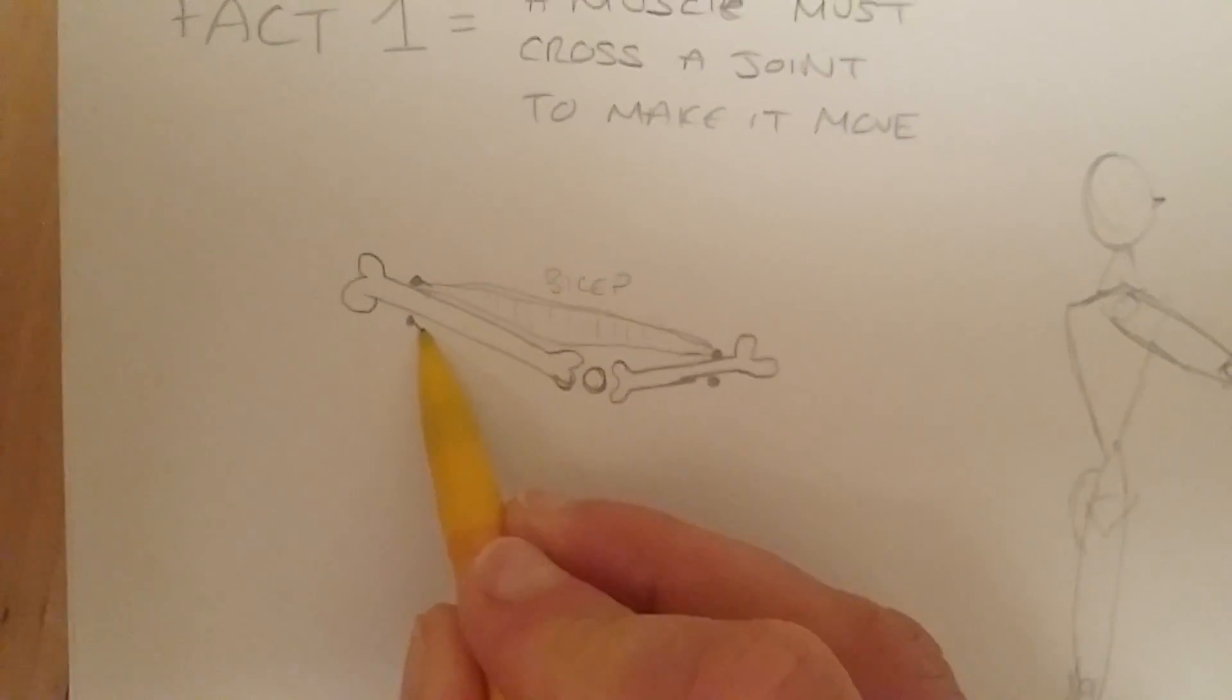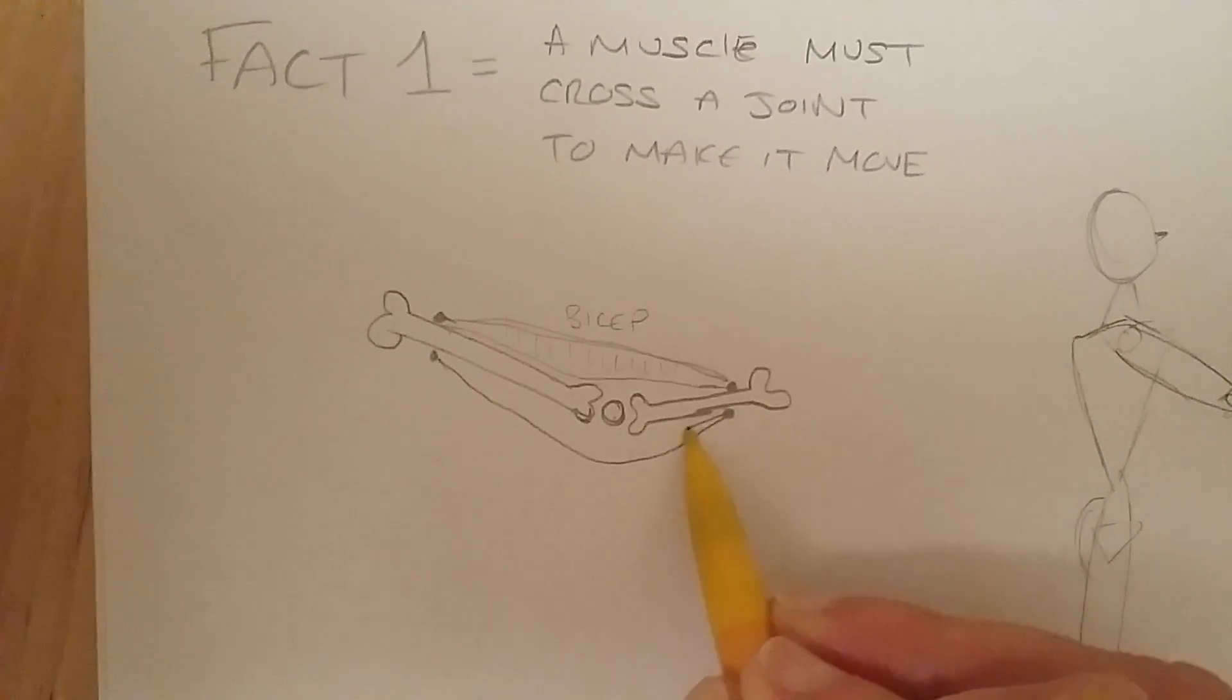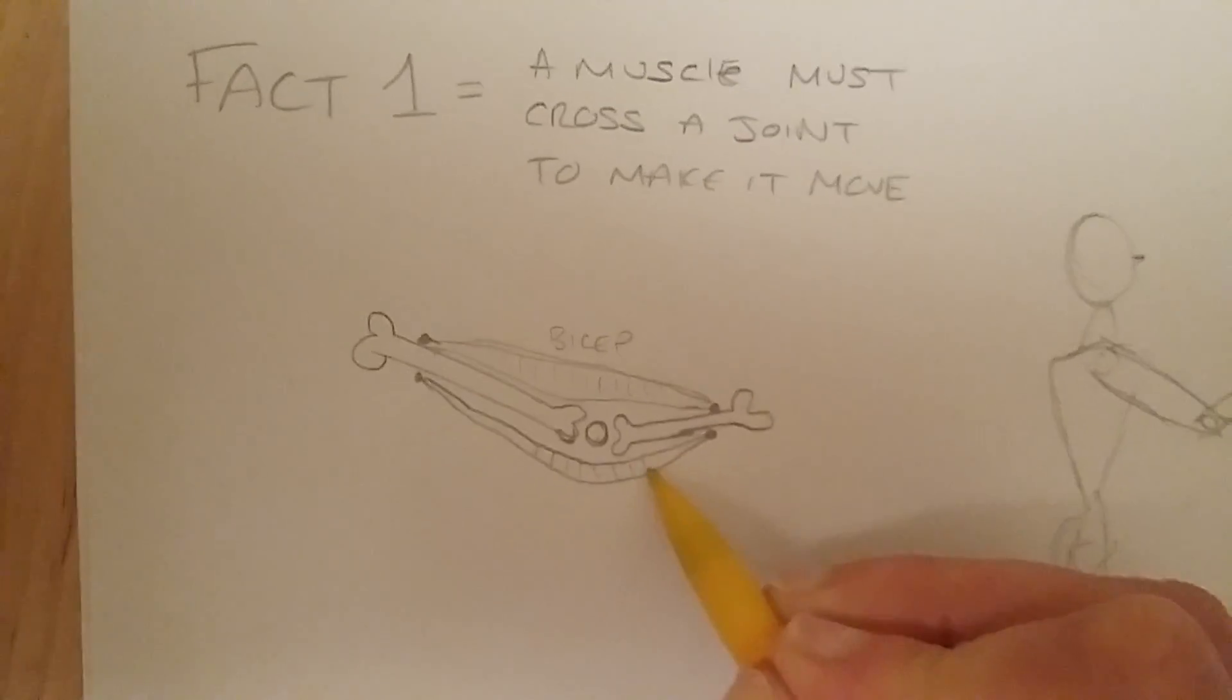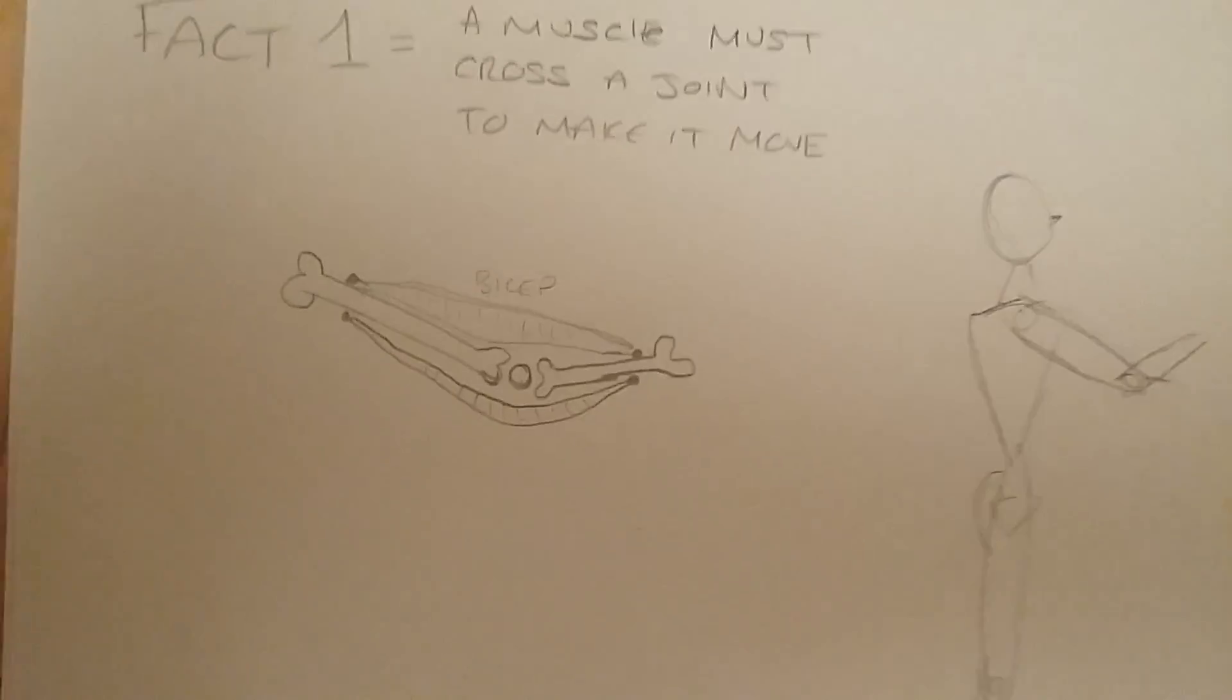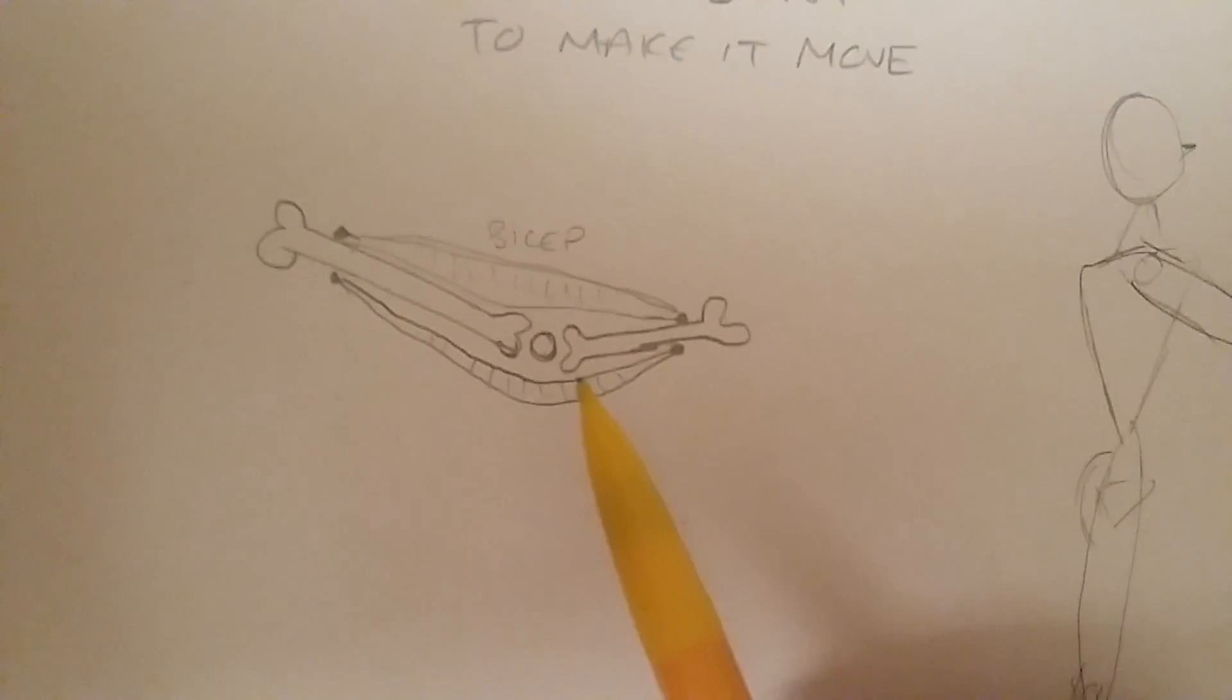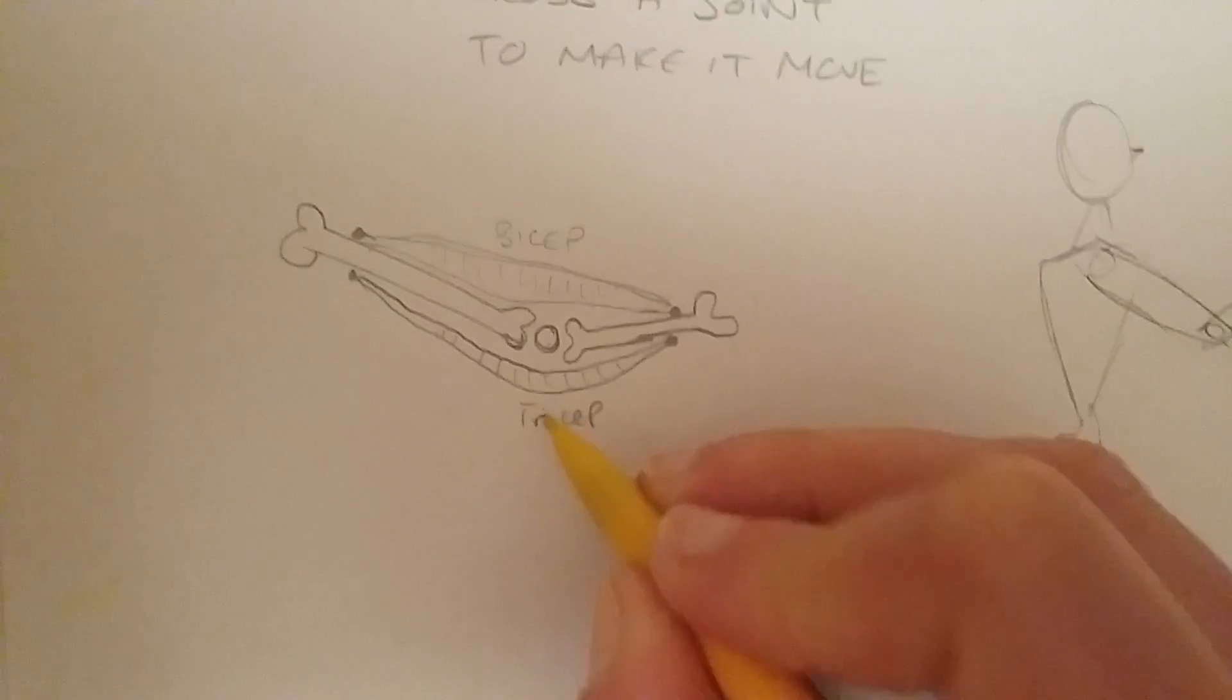Then down here, this has got to be your tricep. So let's try and draw a tricep. Fantastic. Okay, so what you'll notice is that they go either side of every single joint you have. So if you have a joint with a muscle on one side, I guarantee you'll have a joint with a muscle on the other side. So that's going to be our tricep.